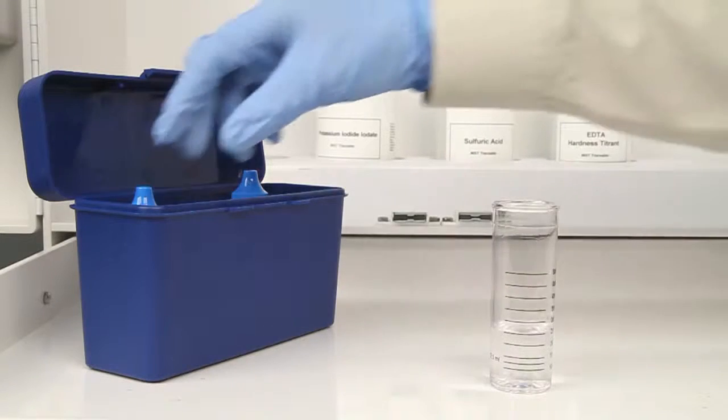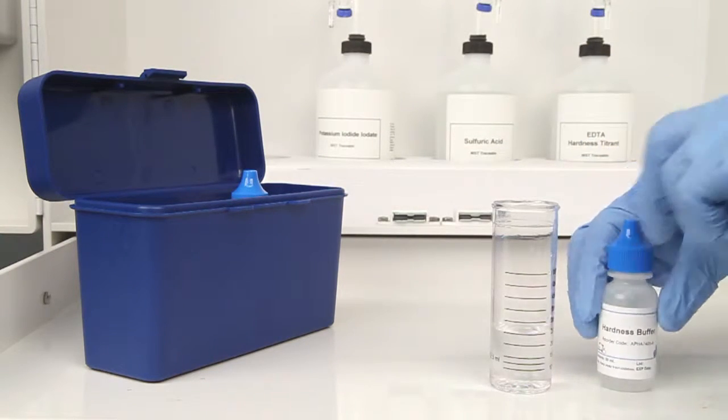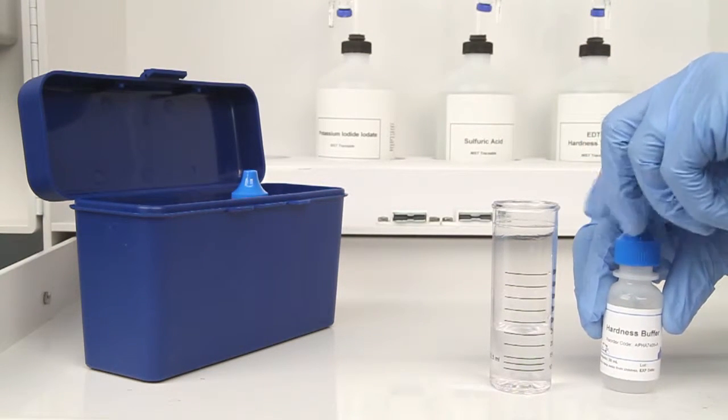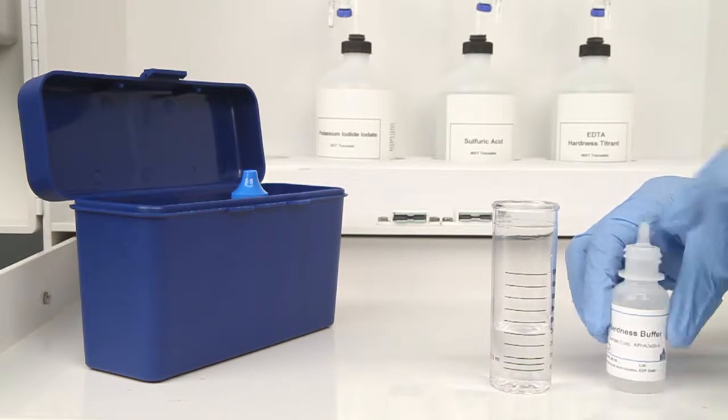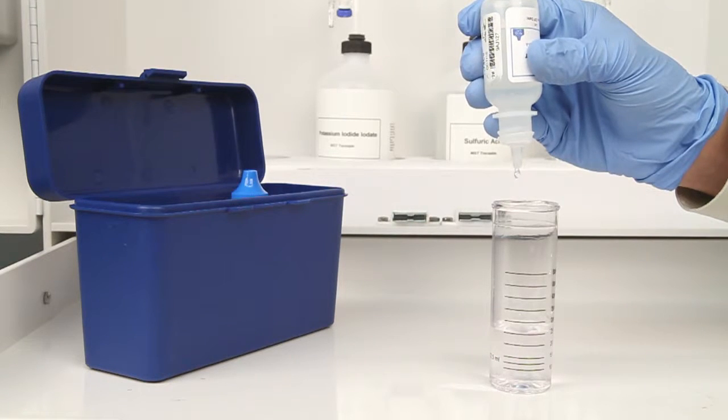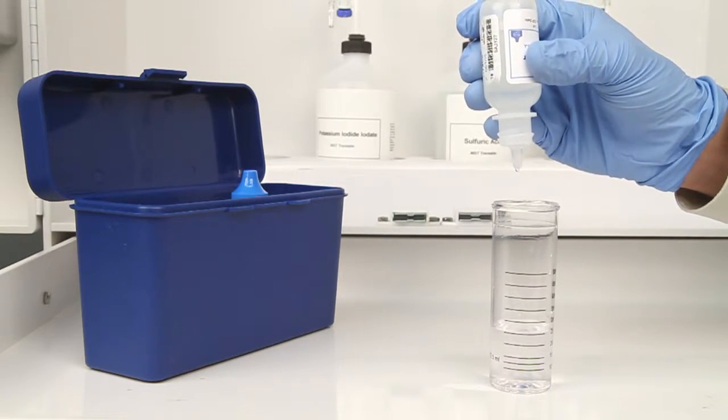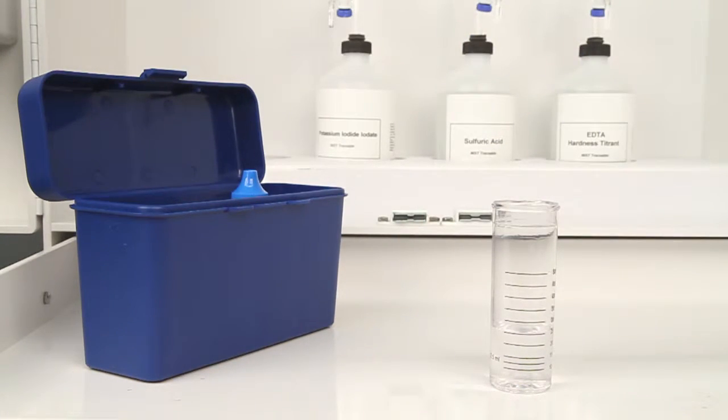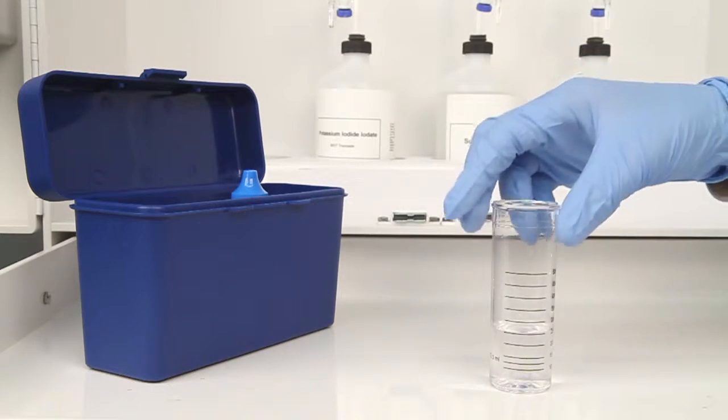The next step is to add five drops of hardness buffer. The bottle contains a dropper tip, so it's important to hold the bottle vertically to get a consistent drop size. After the addition of each reagent, swirl the vial to ensure the reagents are properly mixed.